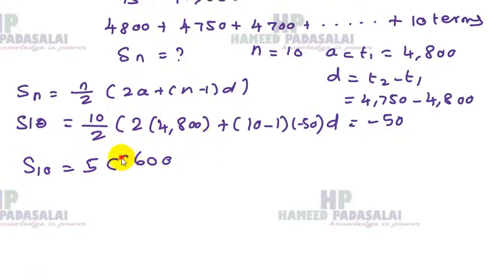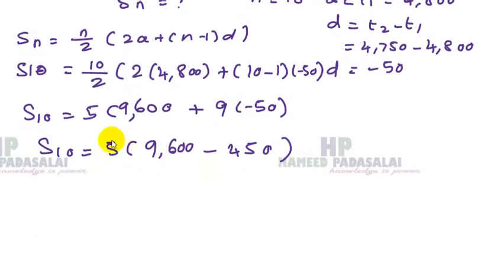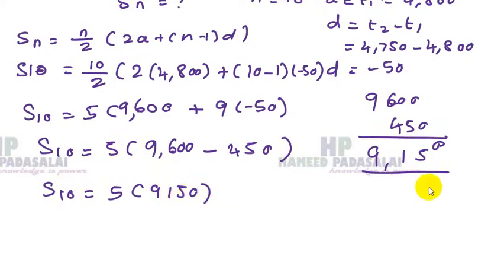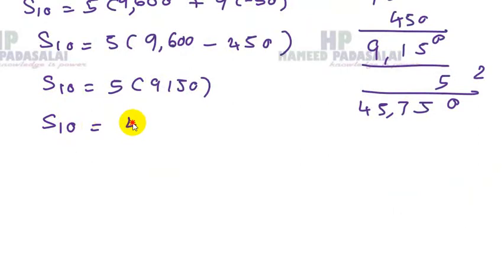Computing: S_10 equals 5 into 9,600 plus 9 into minus 50. That gives 5 into 9,600 minus 450, which equals 5 into 9,150. Therefore S_10 equals 45,750.